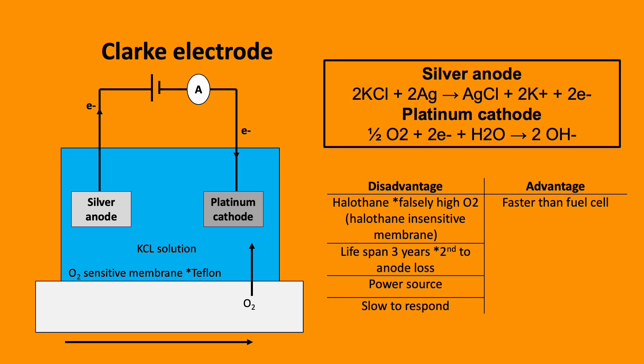Electron flow between the electrodes generates a current which is directly proportional to the partial pressure of oxygen in the dissolved sample. The Clark electrode is faster than a fuel cell as it contains a power source. However, it has a three-year lifespan, results are affected by halothane, and it has a relatively slow response time.